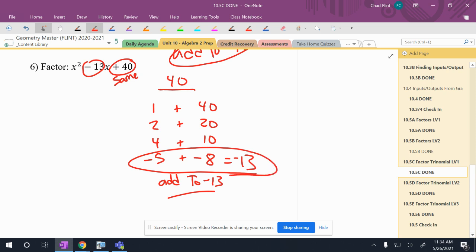So I have negative 5 and negative 8. If you ever look at that and you're like, wait, they can't be right. Negative 5 times negative 8 is positive 40, because negative times negative is positive. And negative 5 plus negative 8 is negative 13. The negatives sometimes can cause a problem.